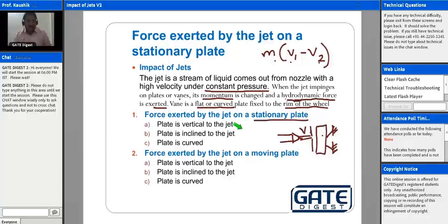One, the plate is vertical to the jet. So plate is vertical to the jet means you can see the jet of fluid is coming out from the plate like this and striking the plate. And this plate is normal or perpendicular to the jet. So when the plate is vertical to the jet, you will get the diagram like this.